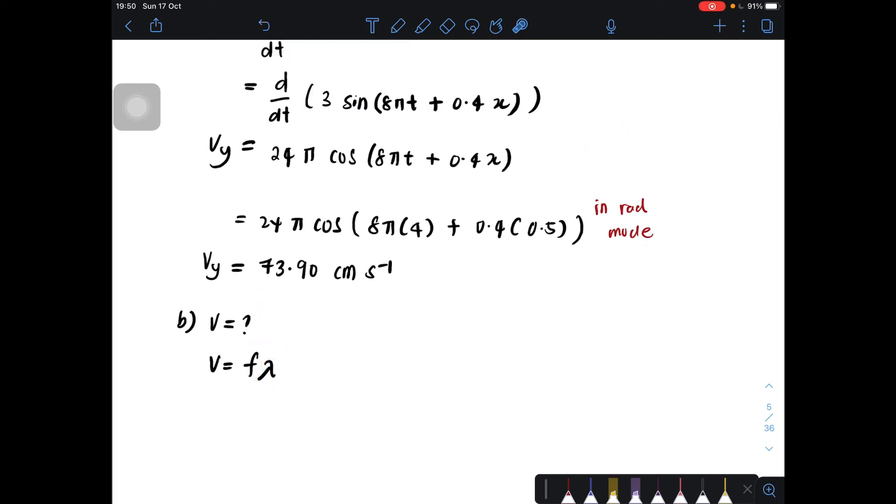So this one we can get from the equation here. Where this will be the value for omega. This will be the value for... So this one omega, this one k.